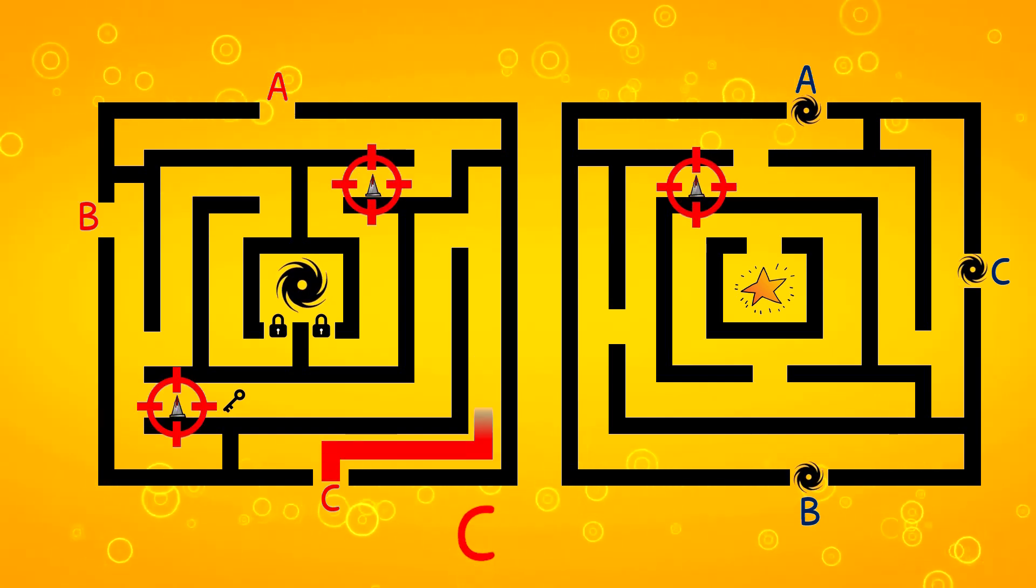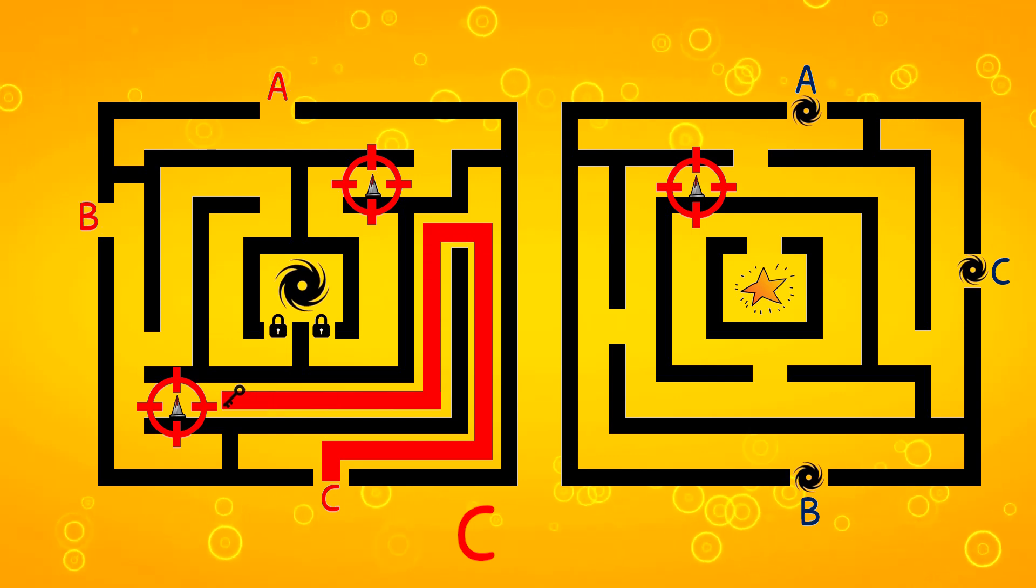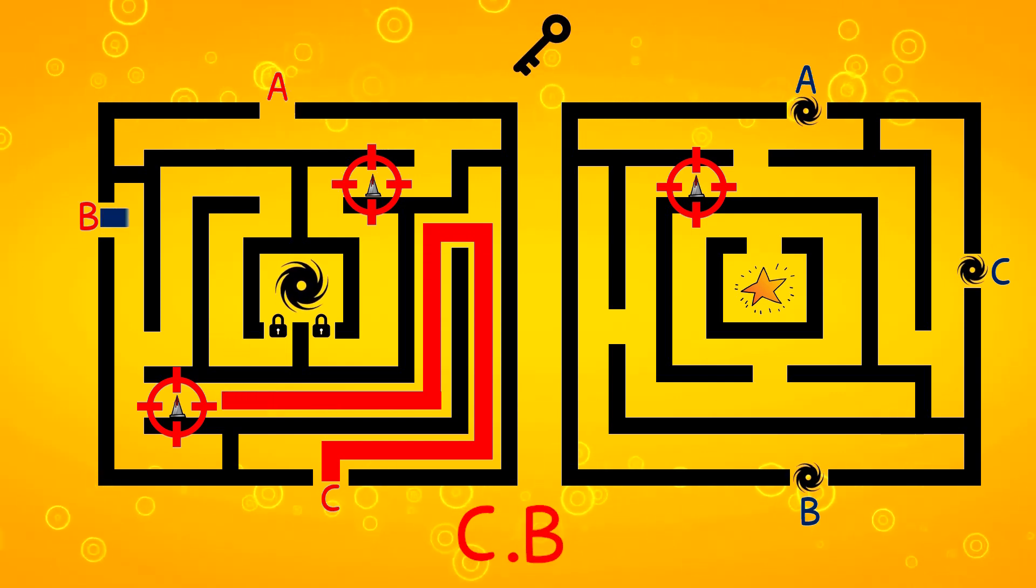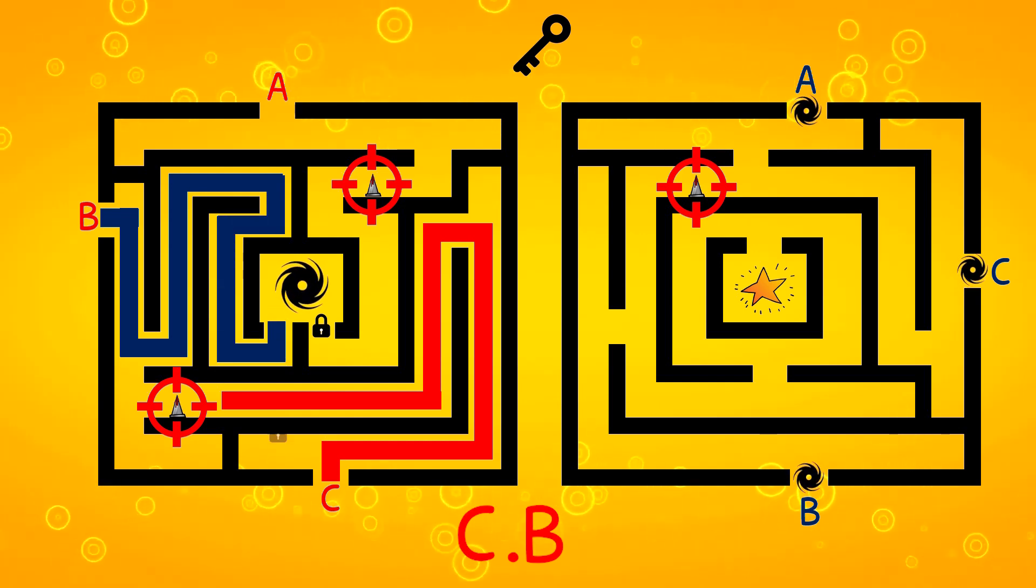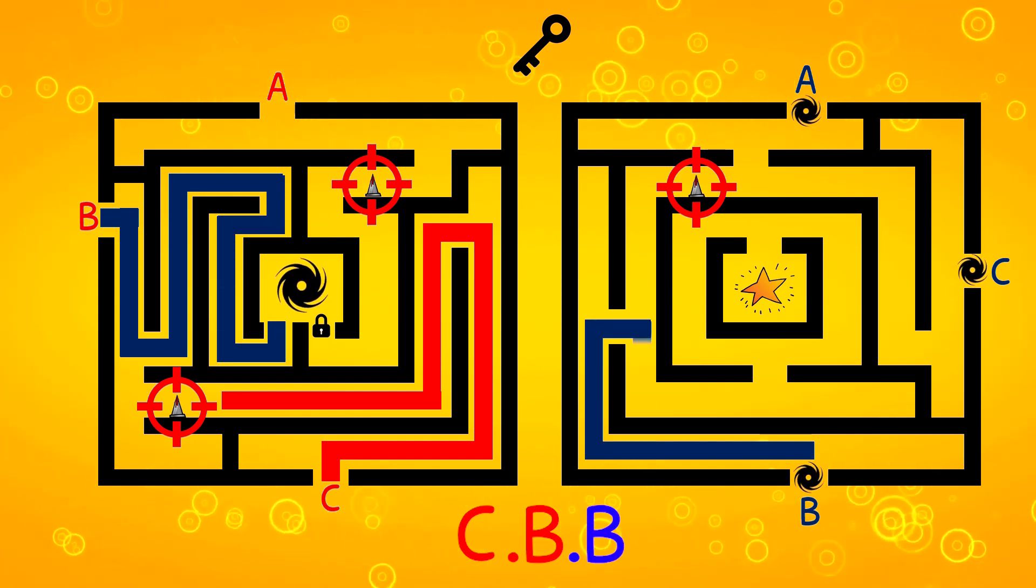First, we reach the key through path C. Then, we enter the portal through path B. Finally, we reach the star through path B.